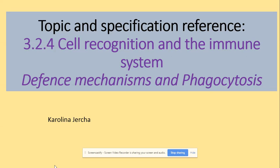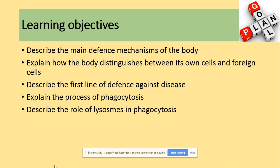Welcome to A-level biology. We will be looking at defense mechanisms and phagocytosis. The learning objectives are: describe the main defense mechanisms of the body, explain how the body distinguishes between its own cells and foreign cells, describe the first line of defense against disease, explain the process of phagocytosis, and describe the role of the lysosome in phagocytosis.